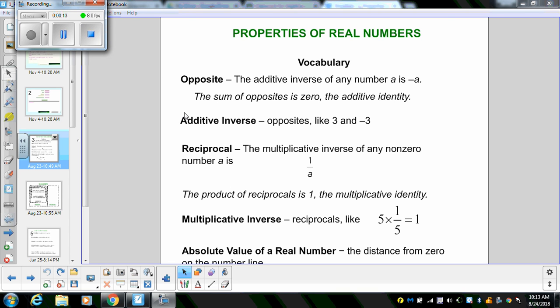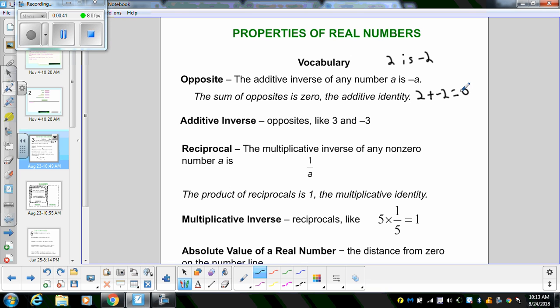Opposite is the additive inverse of any number. A is negative A. The sum of opposites is zero, the additive identity. Basically what that means is if I have a number 2, the opposite is negative 2. And of course if I take 2 plus negative 2, I should equal zero.